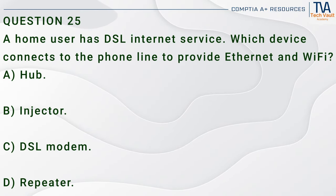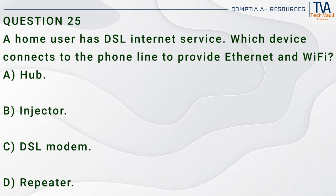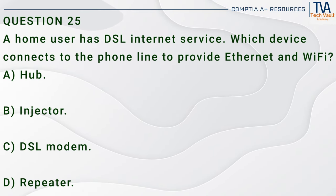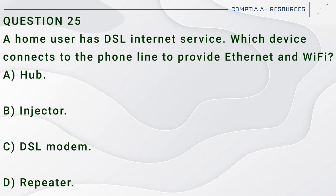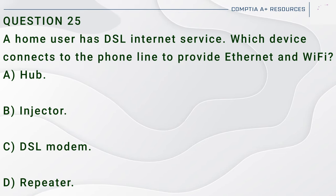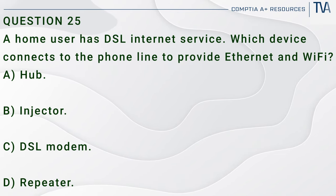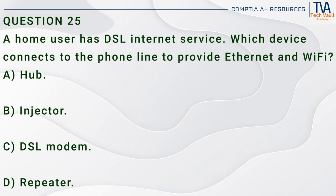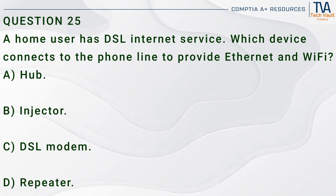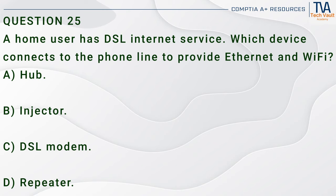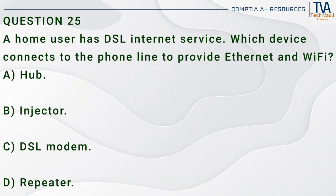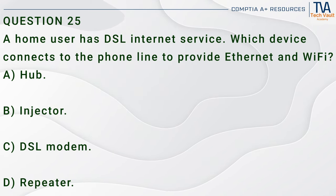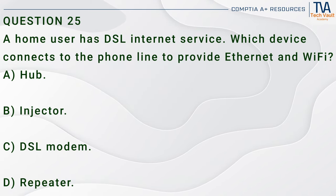Question 25. A home user has DSL internet service. Which device connects to the phone line to provide Ethernet and Wi-Fi? A. Hub. B. Injector. C. DSL modem. D. Repeater.